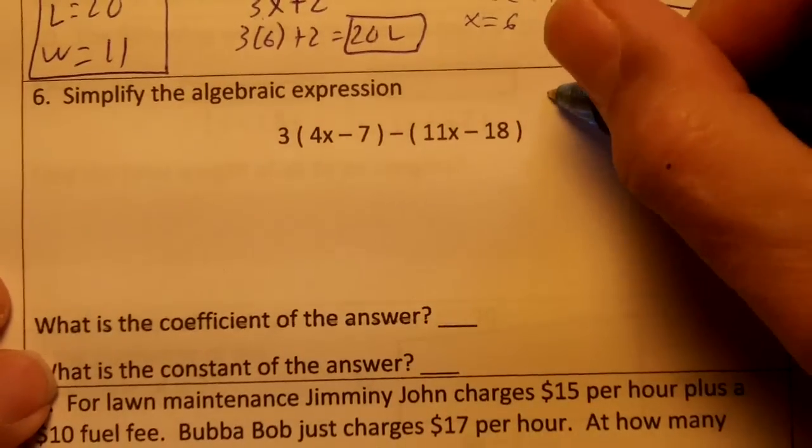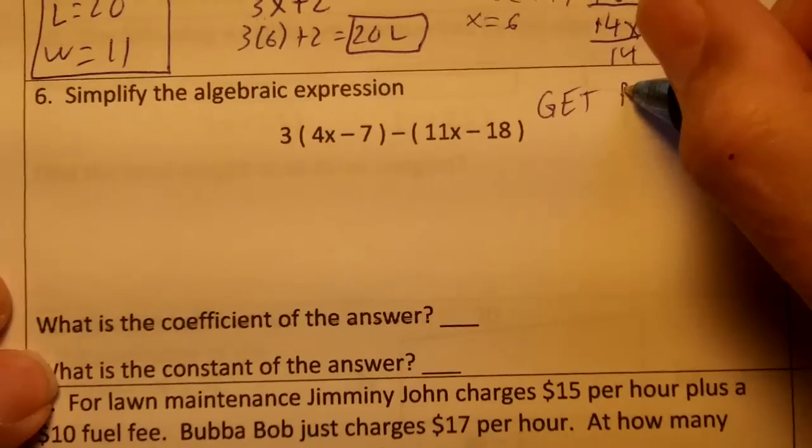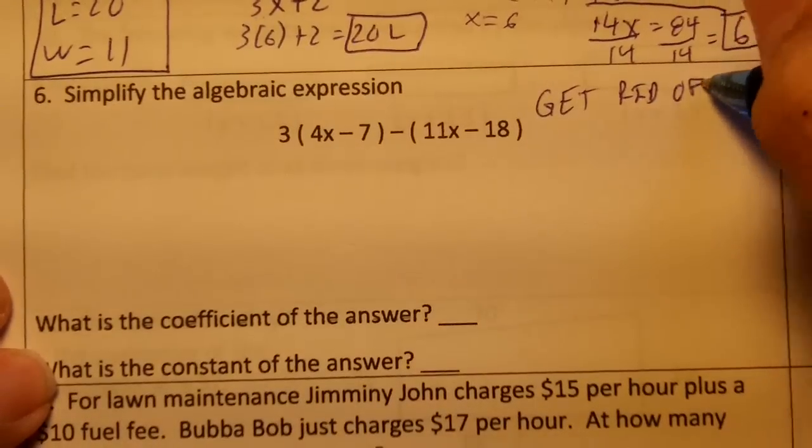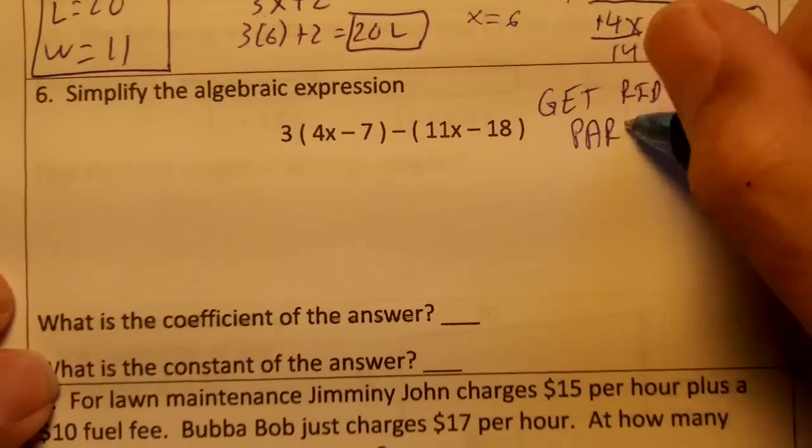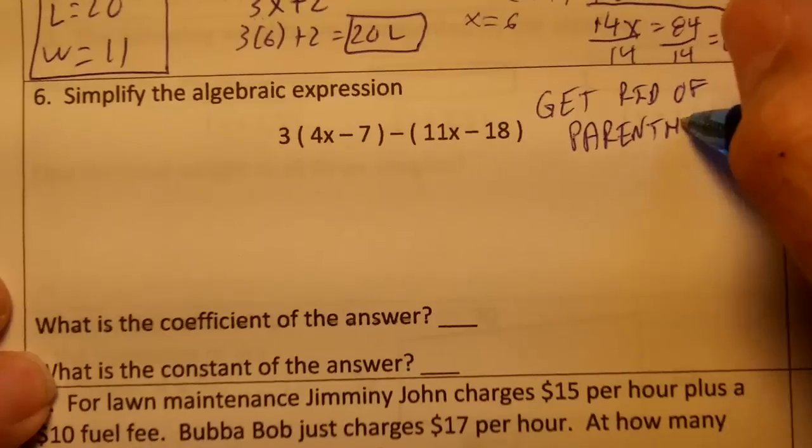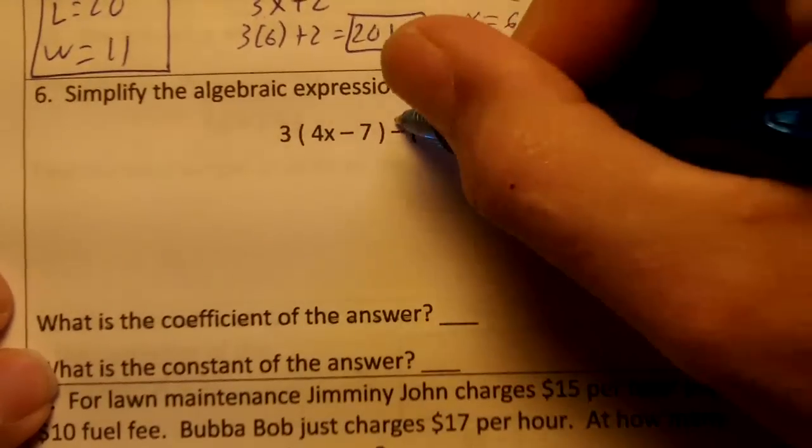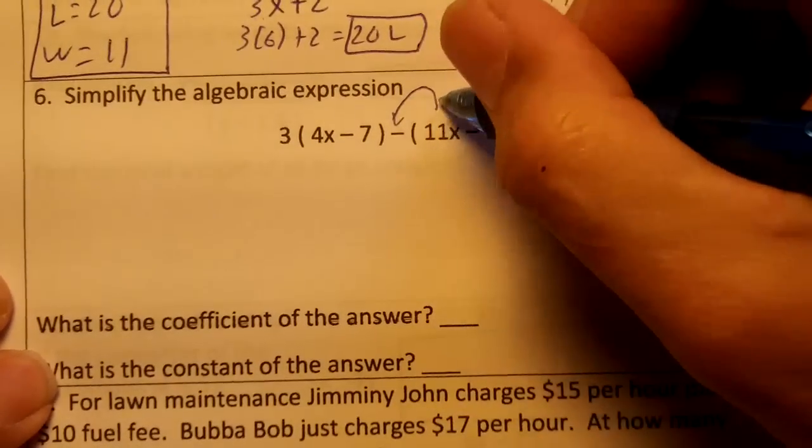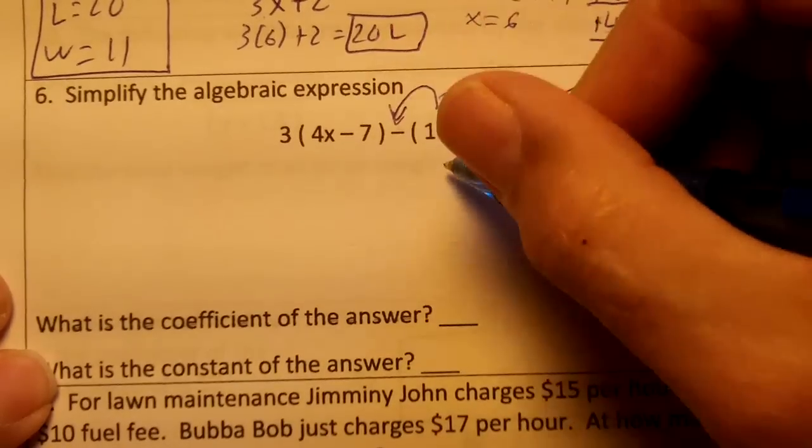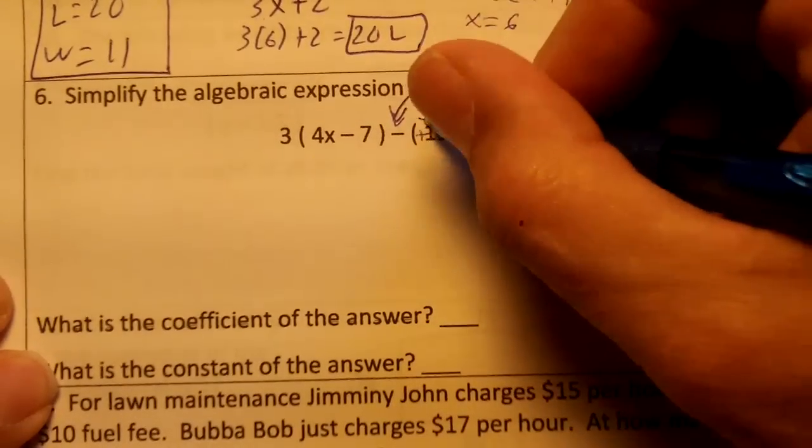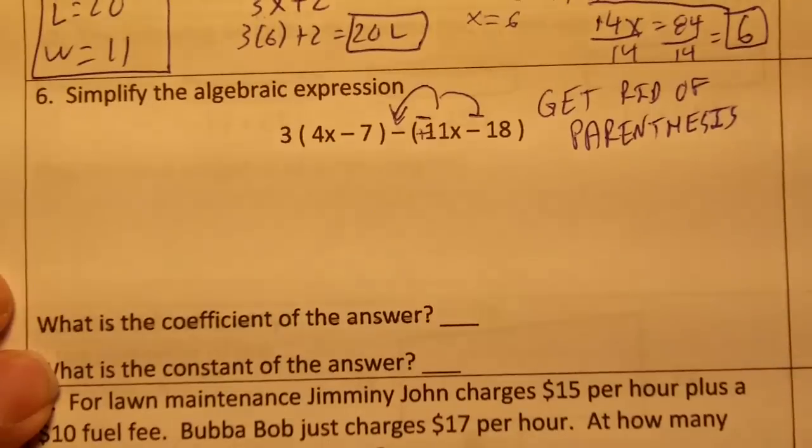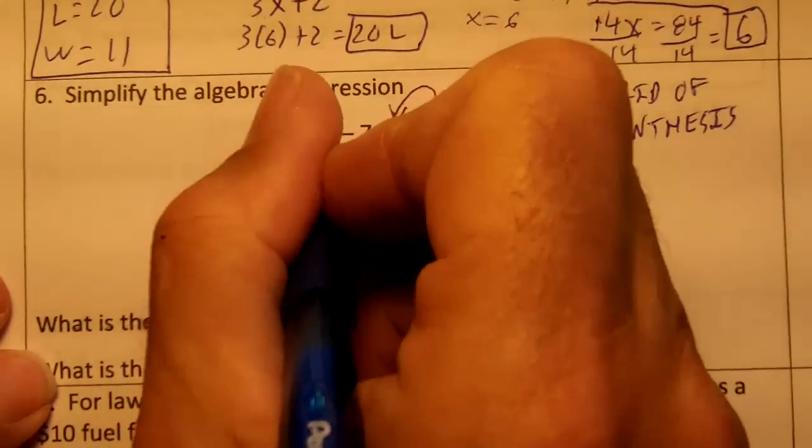First thing you want to do is get rid of parentheses. Remember that minus is distributed—it will change the signs. So that minus is going to get distributed, and over here we're going to distribute the 3.